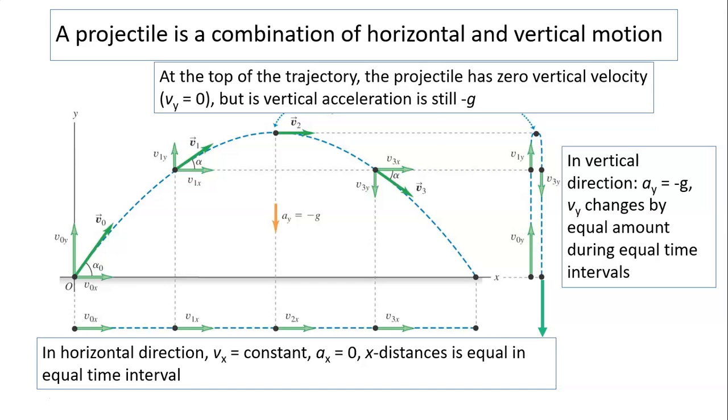In the y direction, in the vertical direction, a-y is negative g. This negative means it's going downward. This indicates v-y changes by equal amount during the equal time interval. So it changes by negative 10 meters per second every second almost.